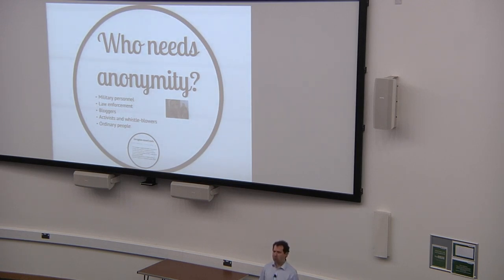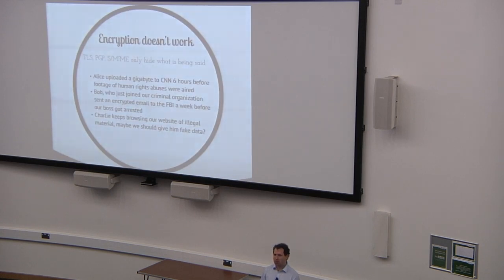But we've already got encryption, so we've got encrypted email, we've got encrypted web browsing, so why can't we just use that? Well basically the encryption doesn't work for the purposes that many people need. Let's suppose that we're assuming that encryption is all working perfectly, software doesn't have bugs, it's been used correctly and then we see that someone called Alice has uploaded a gigabyte of encrypted traffic to CNN six hours before some human rights abuse footage is shown. Probably Alice is the person who uploaded that, so if you're working at the ISP of a country which is trying to repress human rights, encryption did not protect Alice.